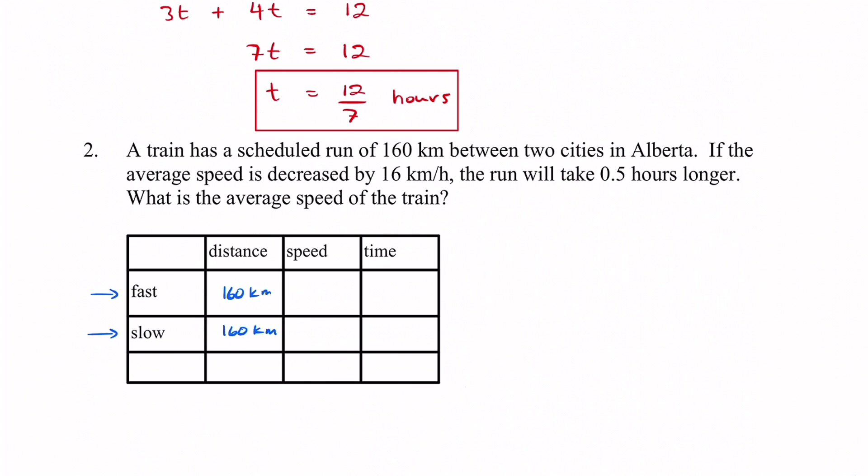The speed we don't know what the speed is for either of these trains. If we did, then we could determine the average. So our speed for the first one we're just going to call x. I don't know what it is. For the slower one it was 16 kilometers slower. So it's going to be x but 16 less, so minus 16.